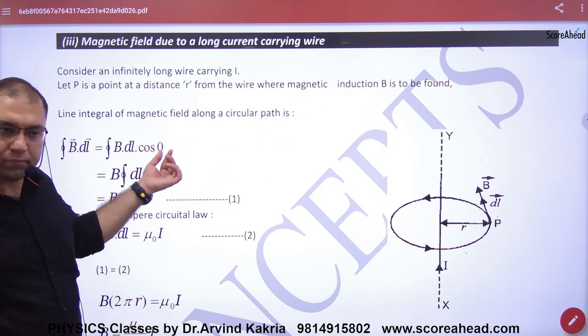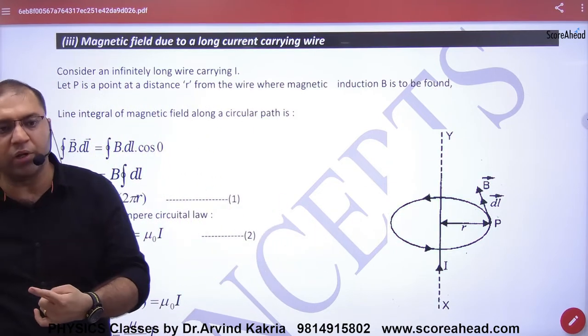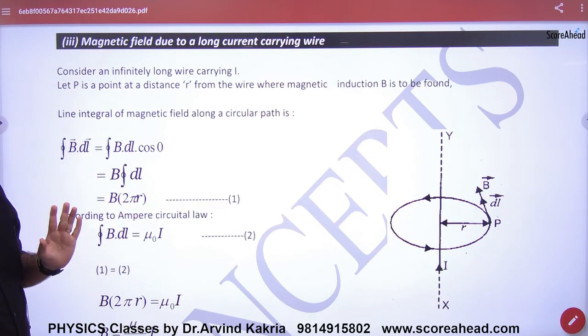The angle is zero, so we have B times dl. Integration of dl, if the radius of the closed path is r, gives 2πr.